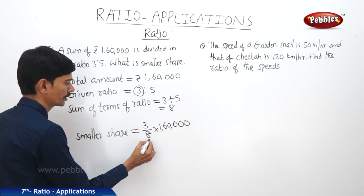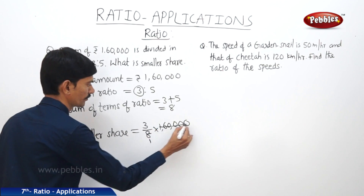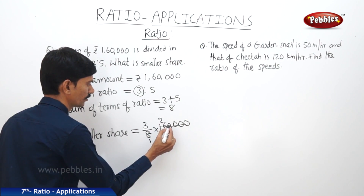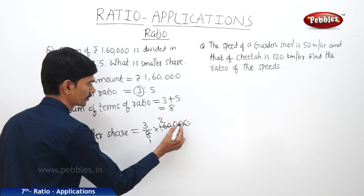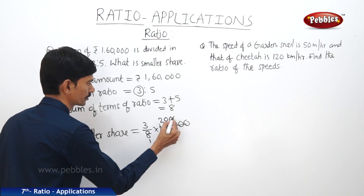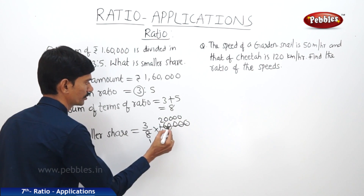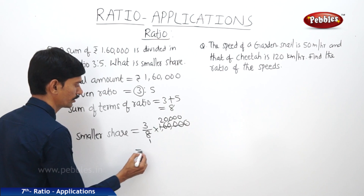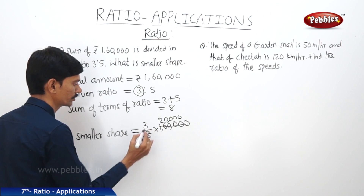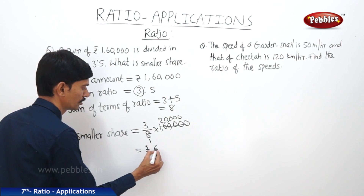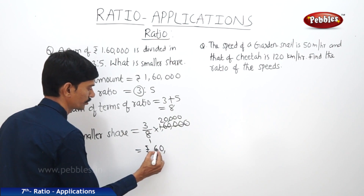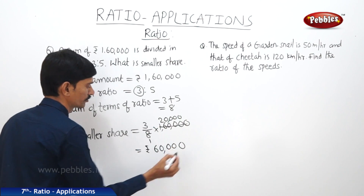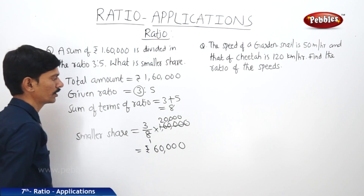So then 8 ones are 8, 8 twos are 16. Simplifying 1,60,000 divided by 8 gives 20,000, and 20,000 multiplied by 3 equals 60,000 rupees. So this is the smallest share.